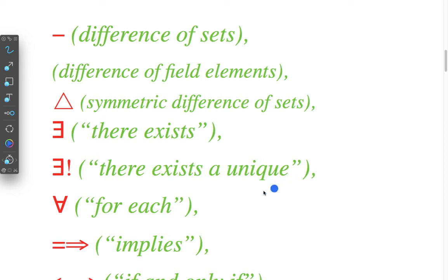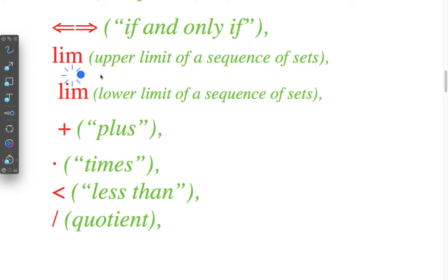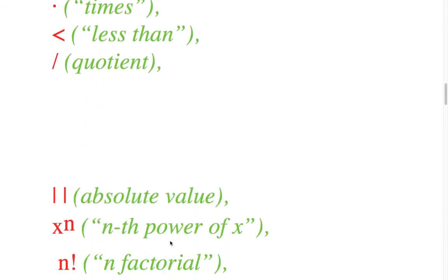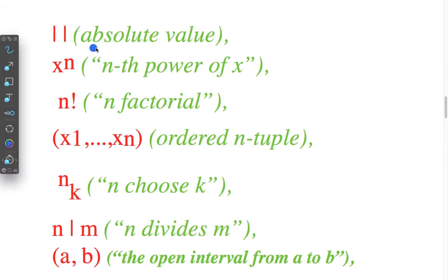There exist, there exist a unique, for each, implies, if and only if, upper limit of a sequence, lower limit of a sequence of sets. Plus, times, less than, quotient, absolute value, power of x, factorial, order, tuple, choose k, divides m.